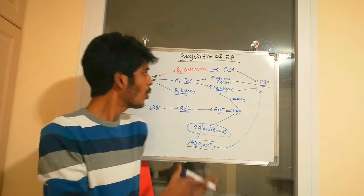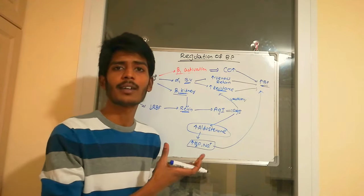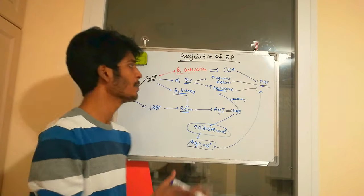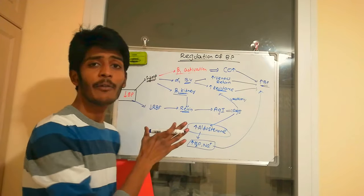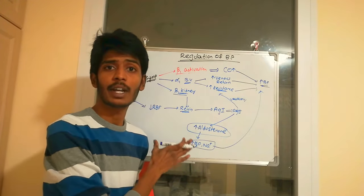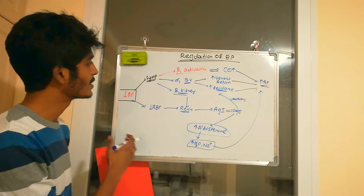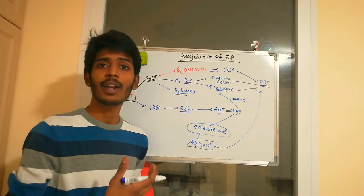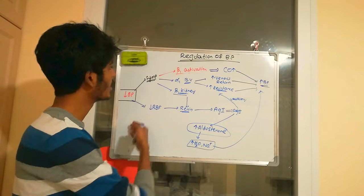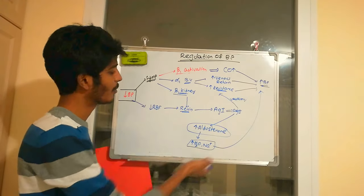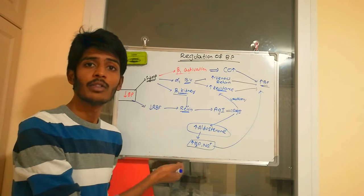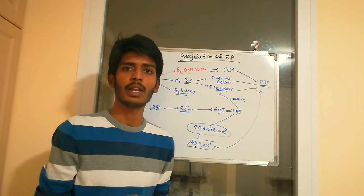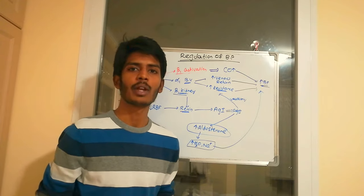The importance of understanding this concept is for antihypertensive pharmacology — it is a very important key. The drugs that work as antihypertensives act somewhere within these mechanisms. This is the regulation of blood pressure in our body. Thank you, keep following.